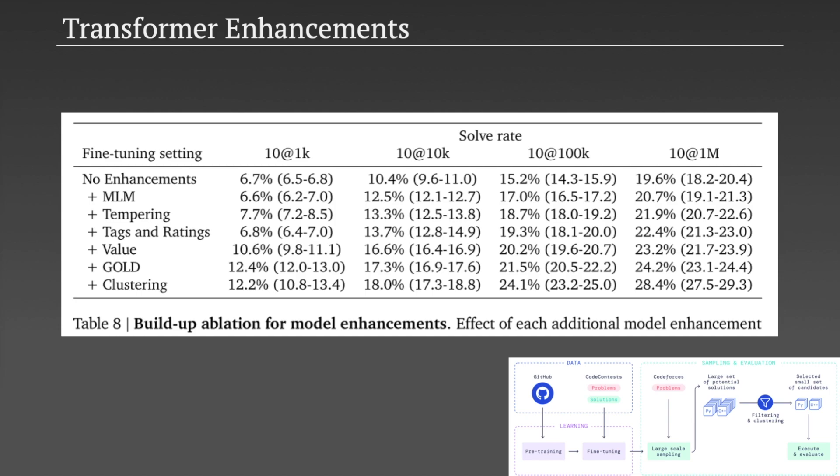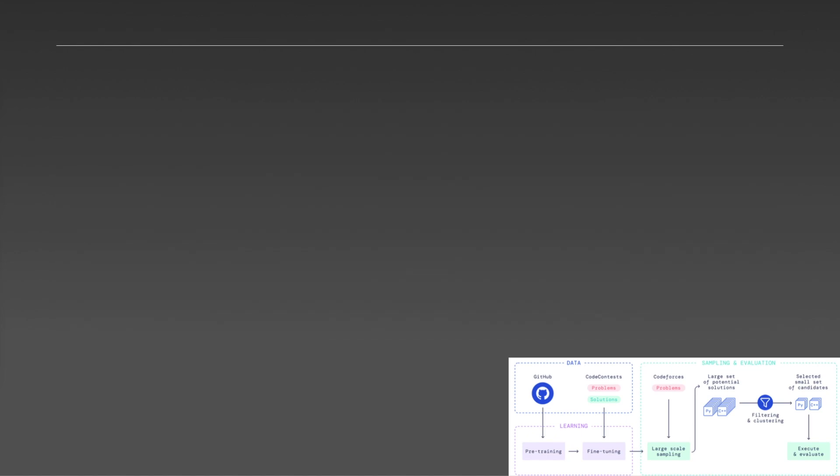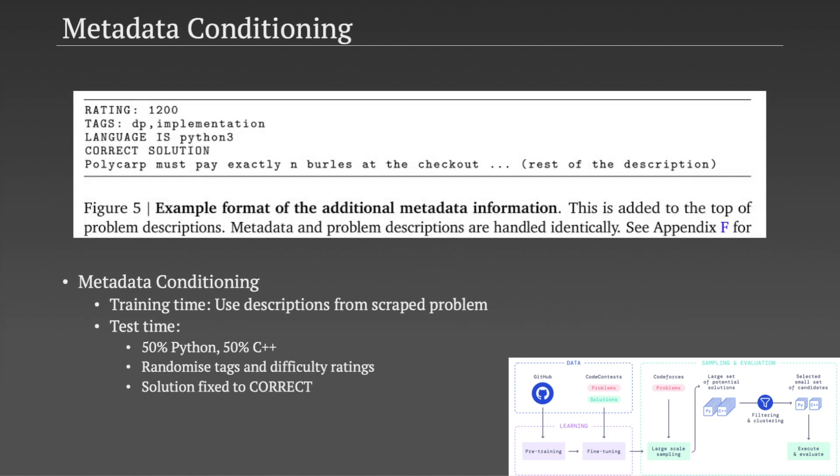There are a couple of other enhancements they borrow from other recent papers. I'm not going to talk about them all, but I did want to highlight one that I thought was pretty cool. This tags and ratings enhancement. So as well as the problem description, we always include metadata as an input to the transformers. This includes the programming language, difficulty rating of the problem, some tags about the problem, and whether the solution is correct or incorrect. At training time they obviously know what the values for these fields are, but at test time they don't. What's pretty cool then is that they can actually input different things into these fields at test time to influence the code that is generated.